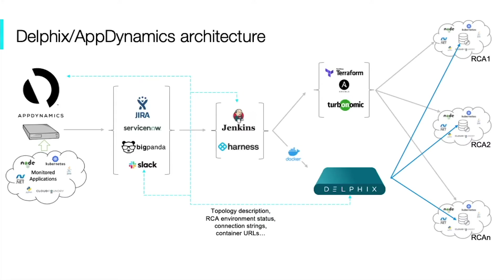If that's the case, an automated workflow orchestrated by Jenkins will start the process of the creation of multiple root cause analysis environments at any point in time, before or after the incident happened in production. When the job is done, just by changing the Jira ticket status, all the created environments will be destroyed.